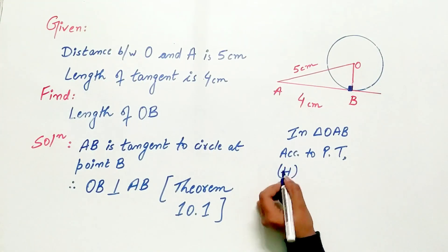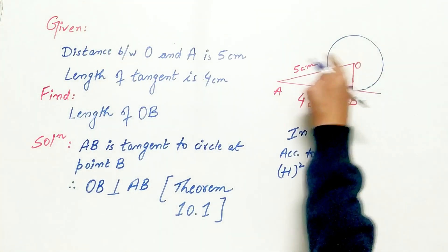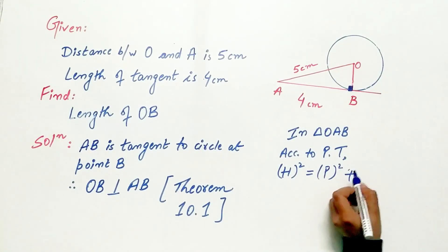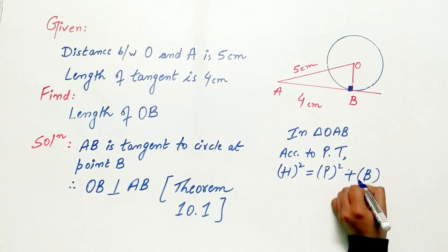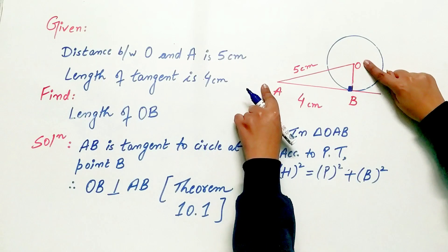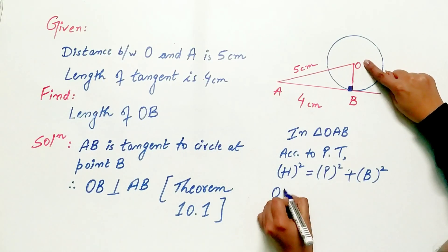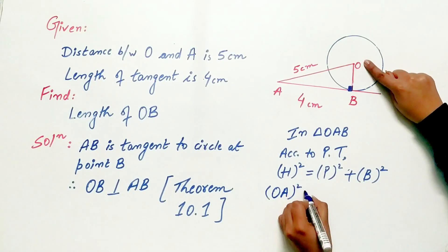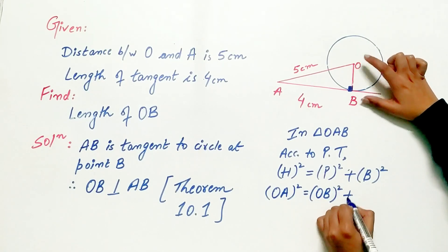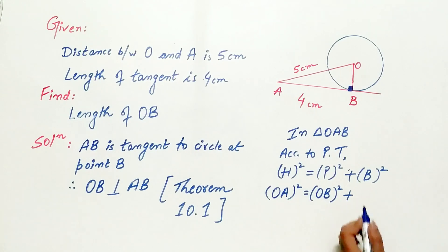Pythagoras theorem says hypotenuse square is equal to perpendicular square plus base square. In this case, hypotenuse is the longest side, that is OA. Perpendicular is OB, our radius of circle. Base is the tangent.